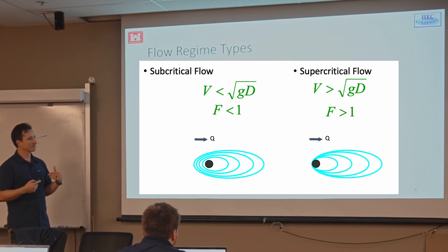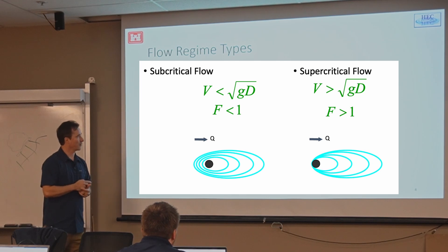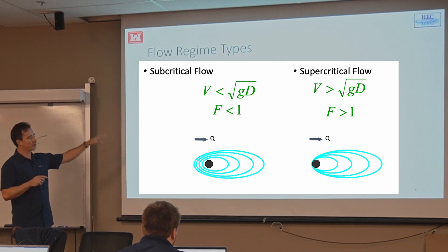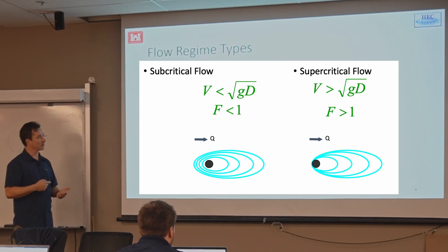That's why when we do subcritical, it's from downstream. You start downstream. And when we solve supercritical flows, that's from upstream. And that has to do with the dominant process, or you can think of it as information, the speed at which information propagates in your domain. Does that make sense?